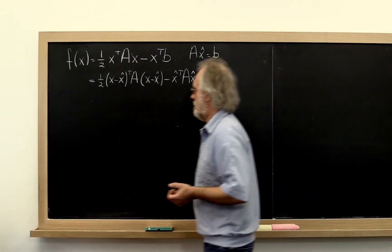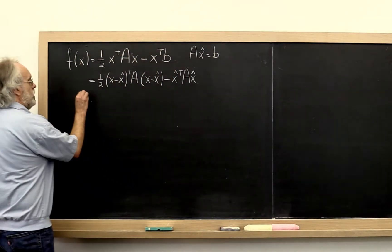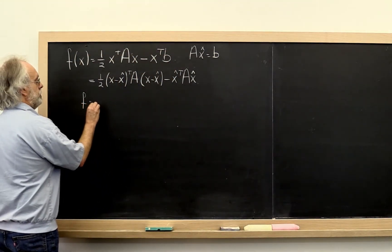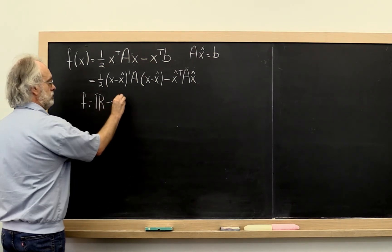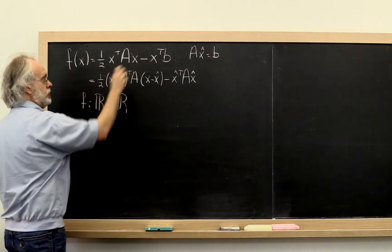Let's explore this a little bit more. Let's look at the case where the function is from R to R. So now this is just a quadratic.